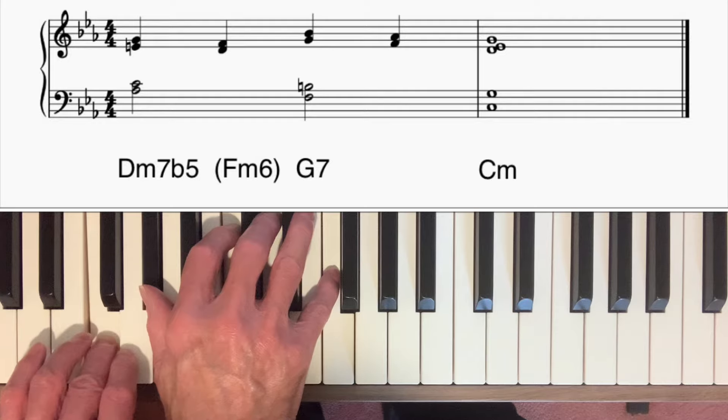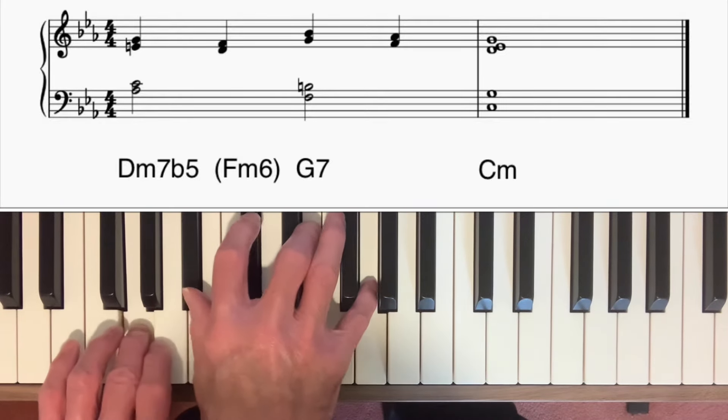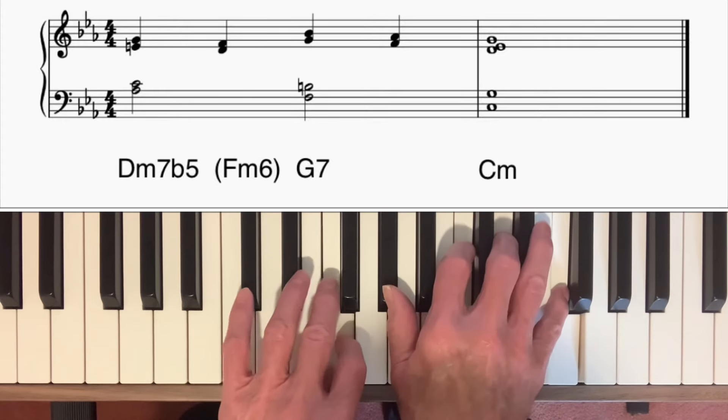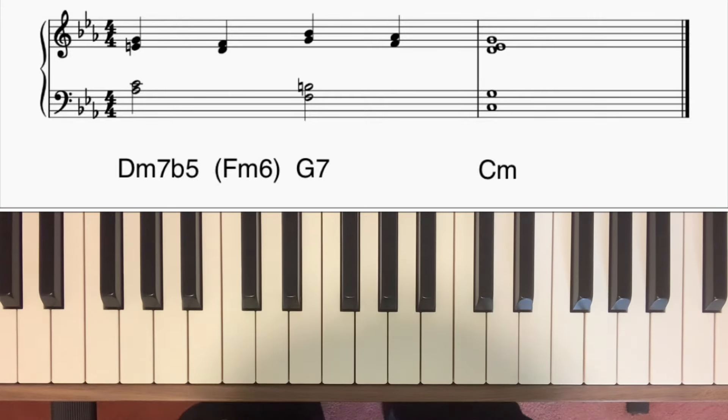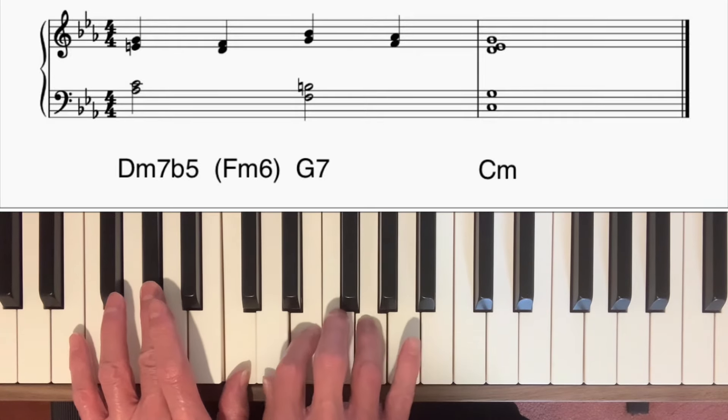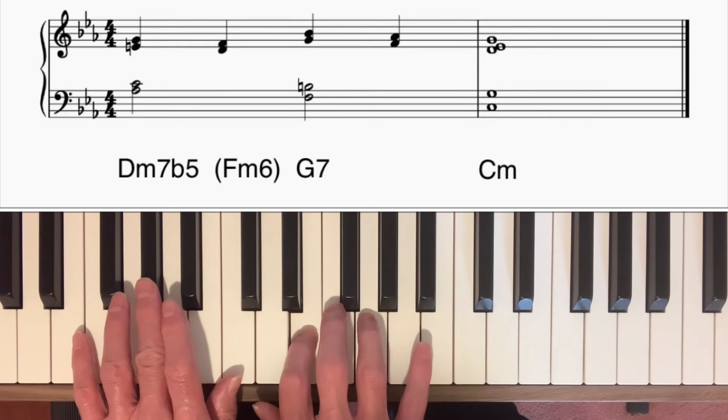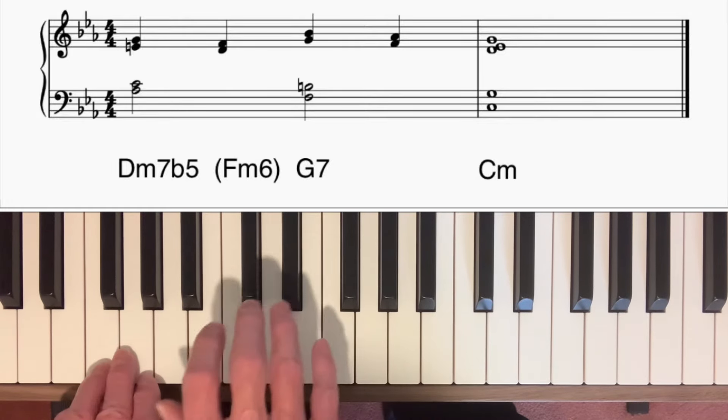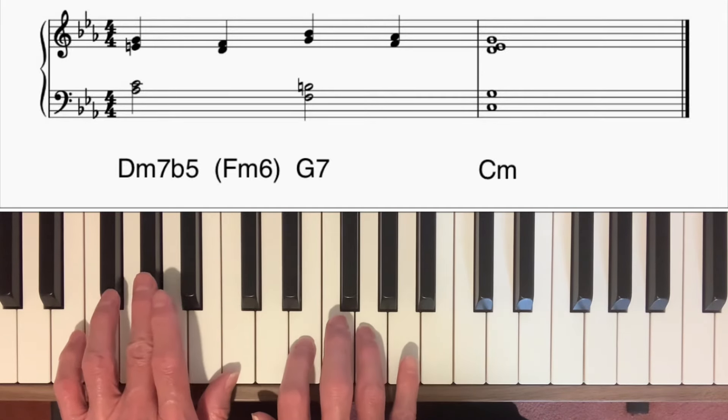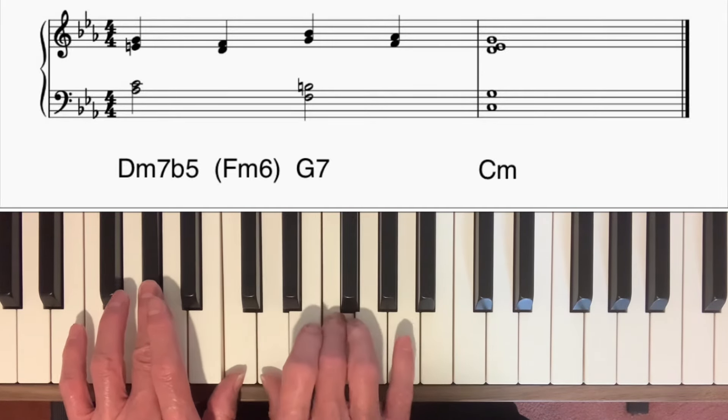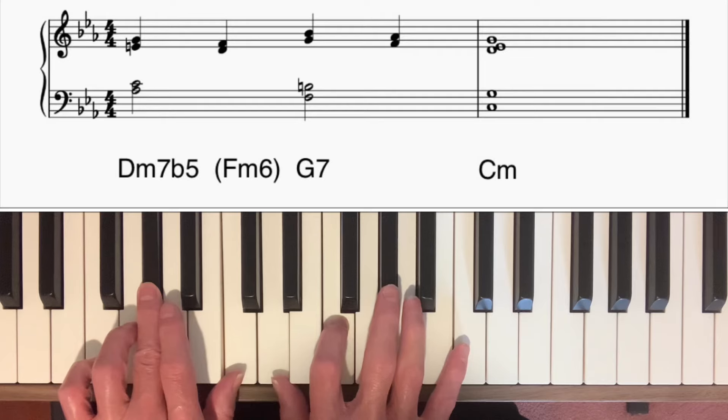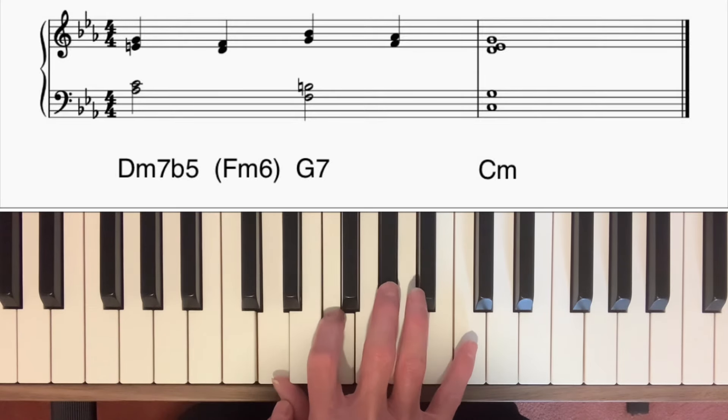Which is when you alternate F minor 6 with diminished 7th chords to create movement over a D minor 7 flat 5 chord. So the first voicing that I played was. Now the E and the G are from the diminished 7th chords in the F minor 6 diminished 7th scale. And they function as upper appoggiature to the D and the F which are simply chord notes. If you look at the notes there, that's just an inversion of D minor 7 flat 5.